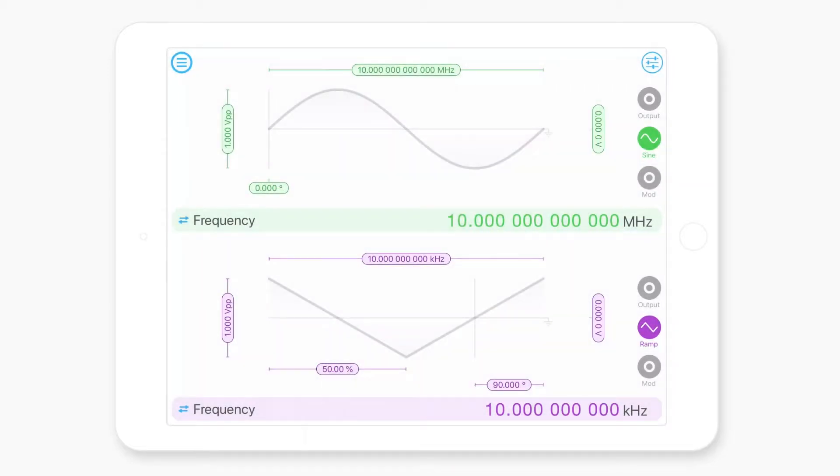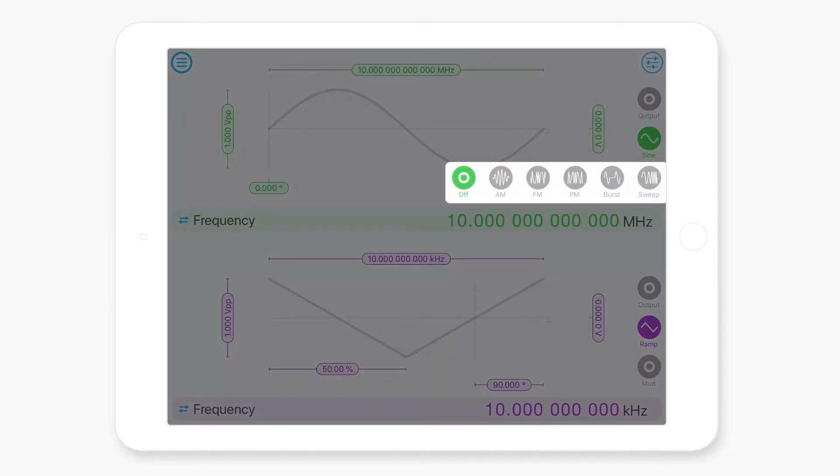We can also select from different modulation types. So the available modulations supported are amplitude modulation, frequency modulation, phase modulation, burst modulation and frequency sweep.